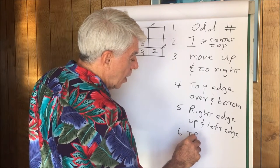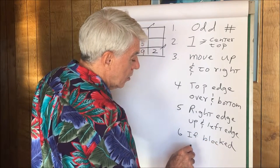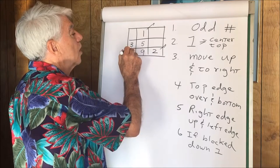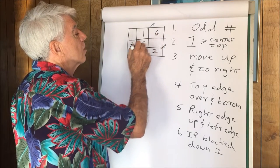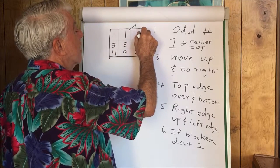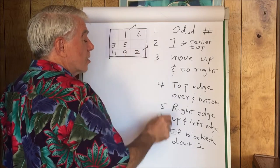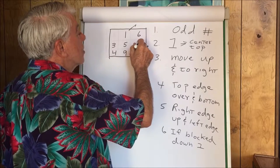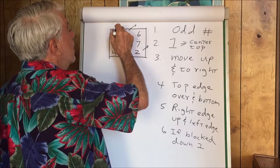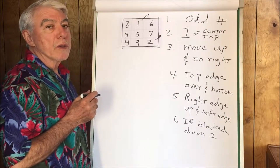So the one is supposed to go up like this, it can't, so right here, top edge, over and bottom. Two. We can't go up and to the right, so the next rule is right edge, up, left edge. Three. Six. The three is blocked so we go down one. Four, five, six.